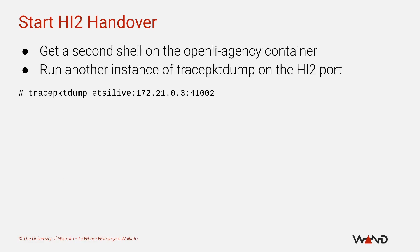Since there are two handover interfaces, you'll need a second trace_packet_dump instance to receive and parse the records on HI2. Open up a second terminal, use docker exec to get another shell on your openli-agency container, and then run trace_packet_dump again — this time using the port number you selected for HI2. In my case I selected 41002. The resulting behavior will appear the same as the HI3 instance: there'll be no obvious output just yet.